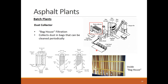The dust collector or bag house filters the exhaust air from the drum dryer before releasing it to the outside air or recycling it back to the drum. In filtration mode, the dusty air flows through the filter bag walls, leaving the dust particles hanging on the bag from outside. In the bag cleaning mode, the air flow is reversed to kick the collected dust off the bag.